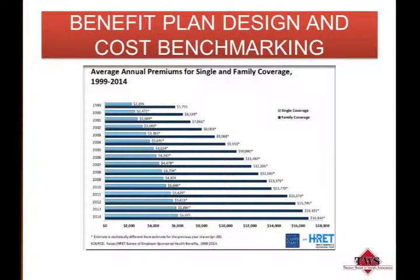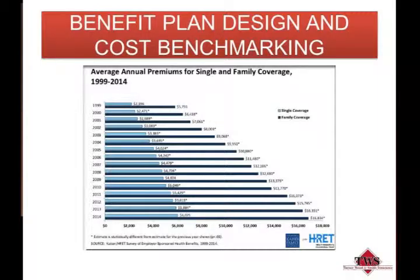This slide is from the Kaiser Family Foundation and shows average annual premiums for a single employee and family coverage from 1999 to 2014. In 1999, the average single premium was $2,196 and family was $5,791. It's 26 percent higher than it was in 2009 and 69 percent higher than it was in 2004 — staggering numbers. An attractive benefits program is vital to your recruiting and retention efforts.